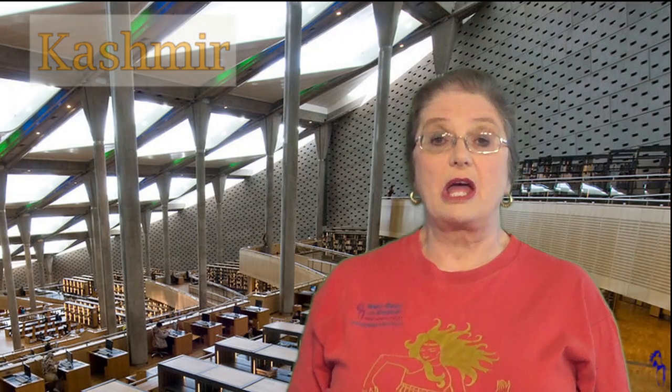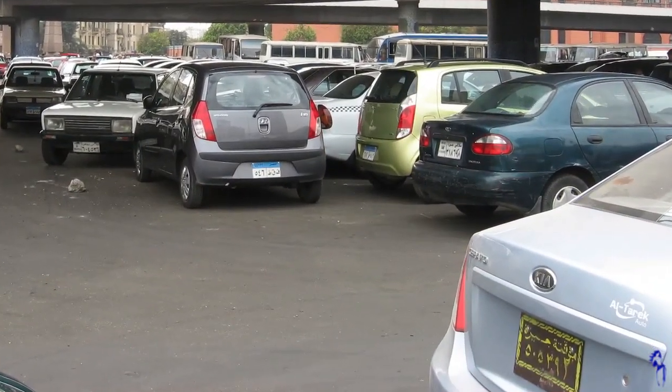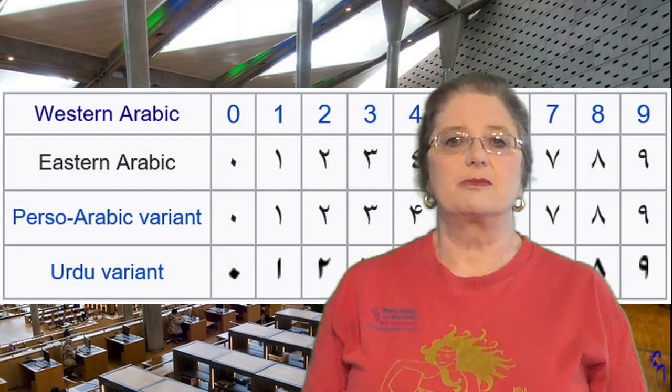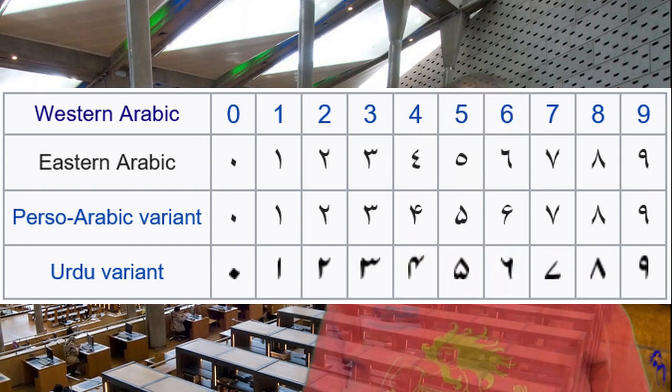Hi, I'm Kashmir. English dropped Roman numerals for Arabic numerals some centuries ago, so you'd think it would be quite simple — maybe the words are different but the symbols are the same. Unfortunately not, because English uses Latin script, also known as Western Arabic script, whereas most of the Middle East uses Eastern Arabic script. So there's a bit of a difference between the numbers.